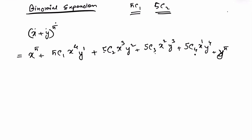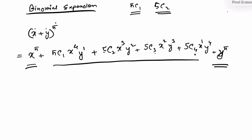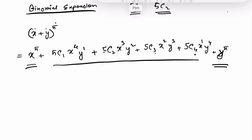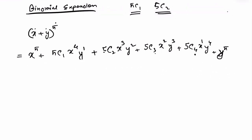To recap: fill in the first and last terms at the very beginning, then in between use the c format — 5c1, 5c2, 5c3 — until you reach x to the power 1. The next step is to simplify.